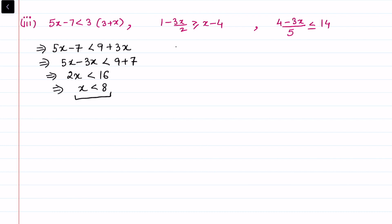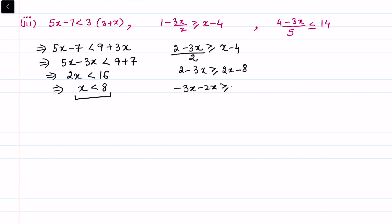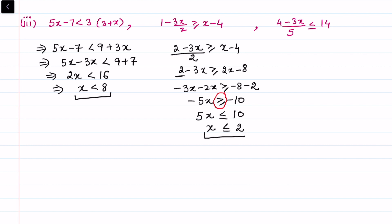For the second inequality, taking the LCM and multiplying both sides by 2 gives 2x minus 8. Taking 2x to one side: minus 3x minus 2x greater than or equal to minus 8 minus 2, so minus 5x greater than or equal to minus 10. Dividing by minus 5 changes the inequality sign, giving 5x less than or equal to 10, so x less than or equal to 2.